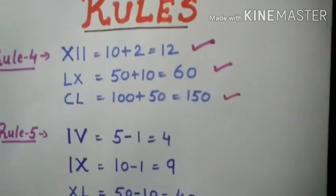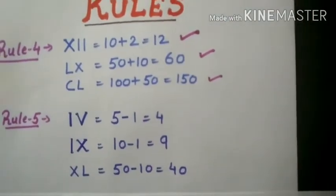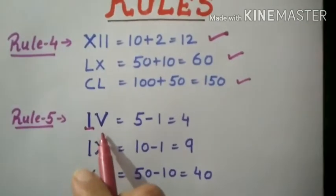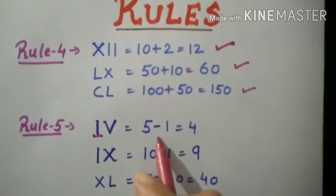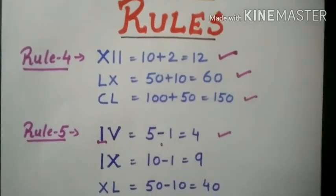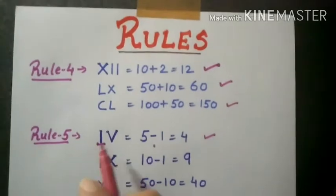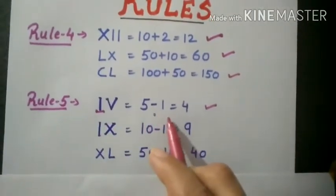Now, for rule 5, if the smaller value of the symbol is written on the left side of the greater value, then it means it is subtracting. Here see the example, I is written on the left side of V means 5 minus 1, which is 4.